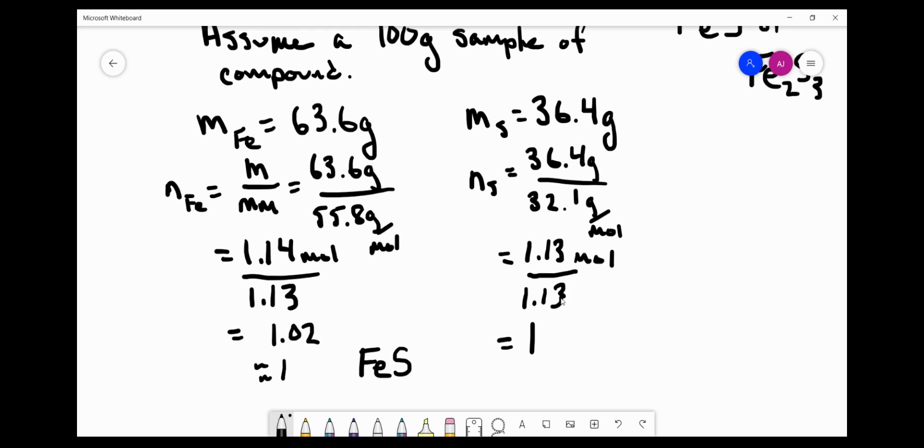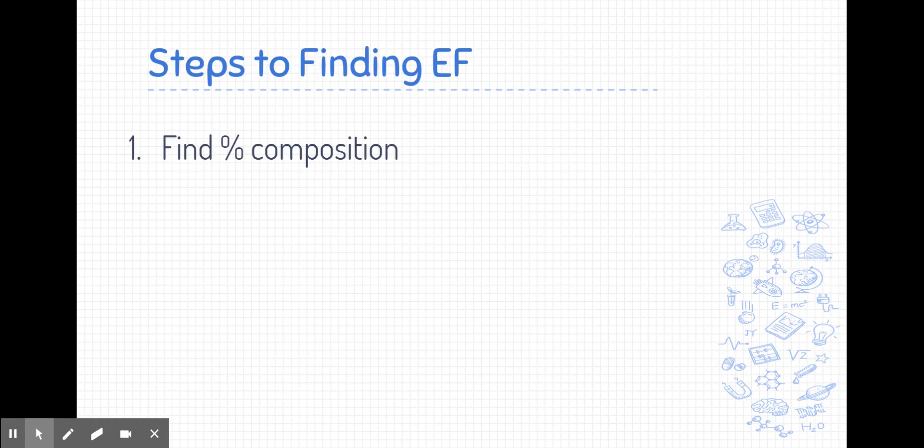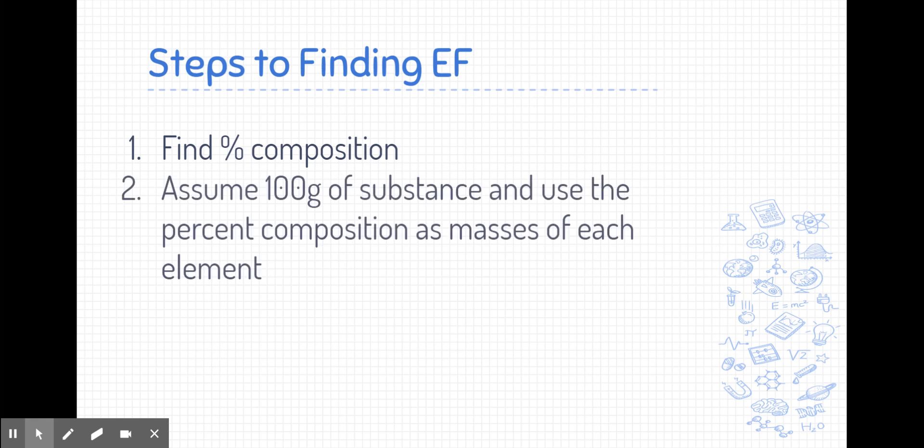So let's review these steps again on how we found the empirical formula. Our first step was to find the percent composition, which in a lot of these problems will be given to you. Once we found the percent composition, we assumed that we had 100 grams of the substance. And so we took the percent composition of each element and turned those into masses. We then took the mass of each element and converted it into moles using the mass over molar mass formula.